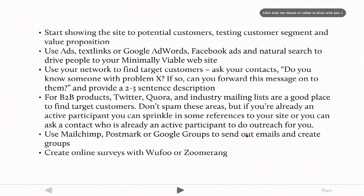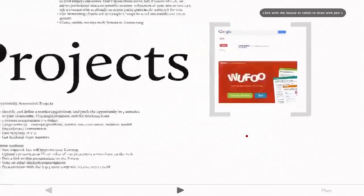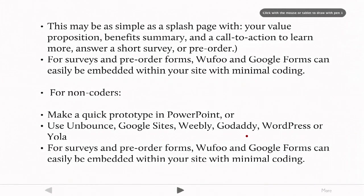You could also use MailChimp, Postmark, Google Groups, or create online surveys with Wufu, Zoomerang, or Qualtrics to get more information about your target customer segment. Your website can be as simple as a splash page giving your value proposition, a summary of benefits, a short survey, and a call to action such as leaving an email address. For non-coders, you could even make a quick prototype in PowerPoint, or use sites like Google Sites, Weebly, GoDaddy, or WordPress to create a basic website.